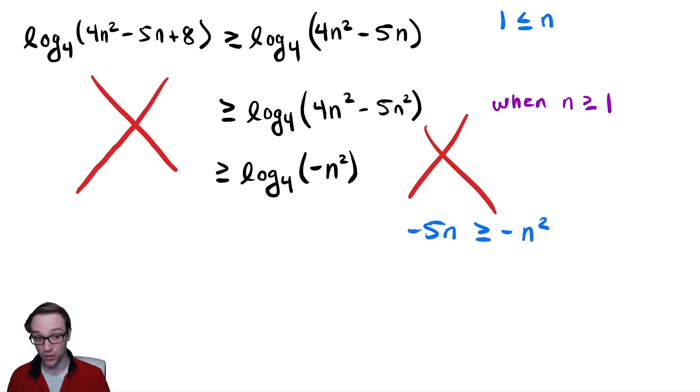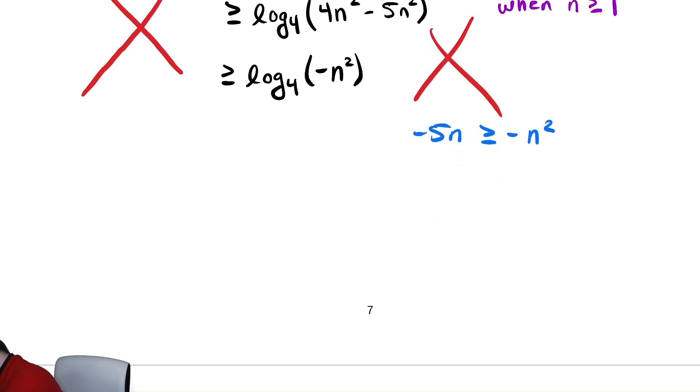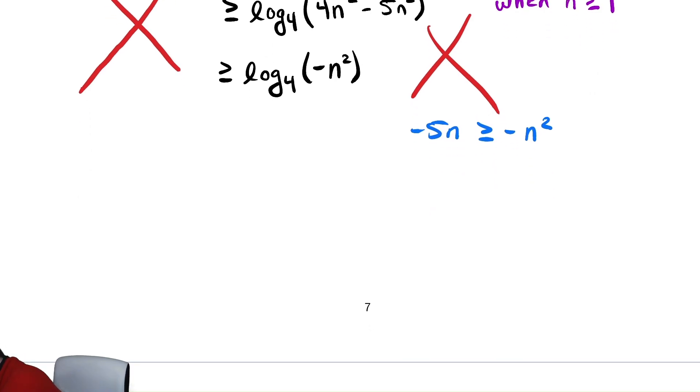So, this just changes our choice of n naught and will avoid some of the chicanery we saw there. So, we're going to divide by negative n, and we get 5. We divide by a negative, so it's less than or equal to n. Alternatively, that's written as n greater than or equal to 5, so that seems good.